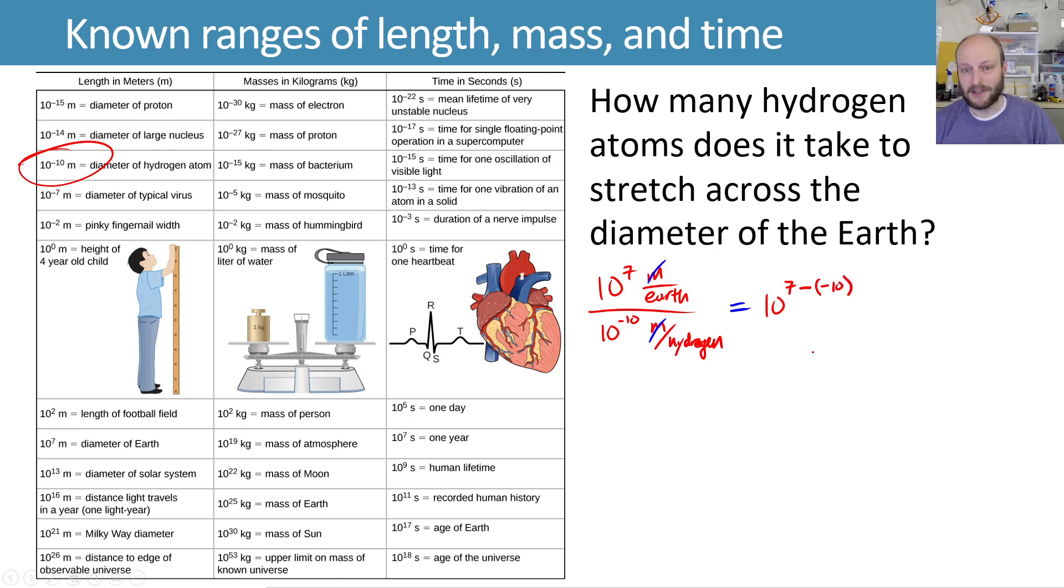So minus a negative is the same as adding. So subtracting a negative is the same as addition. So we end up with 10 to the 17th as the number here. So it's on the order of 10 to the 17th.